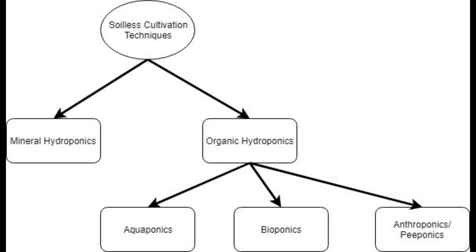As a stark contrast to that, I would place organic hydroponics, which doesn't so much focus on extracting raw minerals from the earth, but rather on reusing or converting existing nutrients that are in one form and otherwise unavailable to plants, converting them into an available form. And in this category, the biggest by far would be aquaponics.